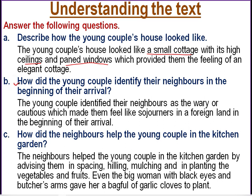Question B: How did the young couple identify their neighbours in the beginning of their arrival? The young couple identified their neighbours as very arqueous, which made them feel like sojourners in a foreign land in the beginning. They felt isolated, alienated, and estranged when they arrived at the newly migrated land.